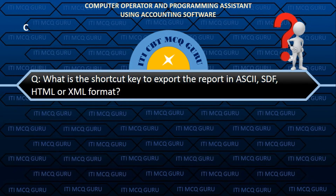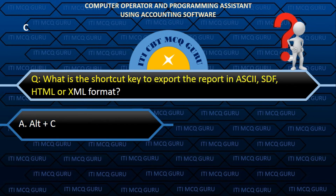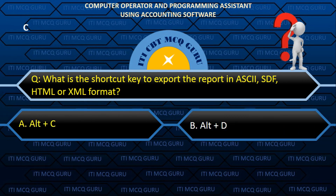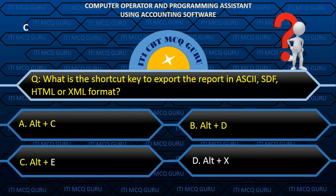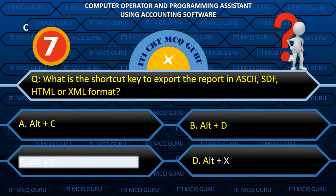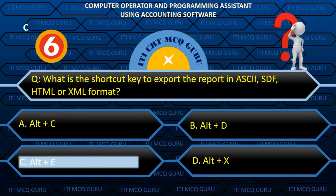What is the shortcut key to export the report in ASCII, SDF, HTML, or XML format? C. Alt plus E.